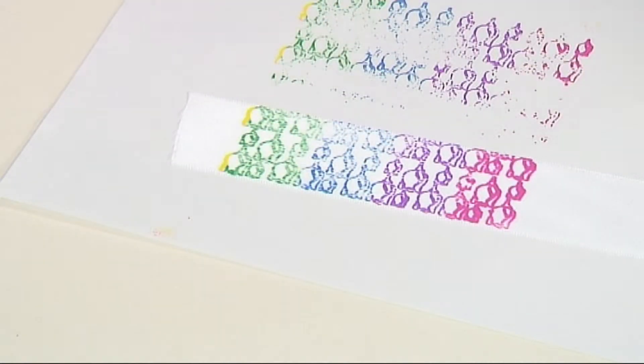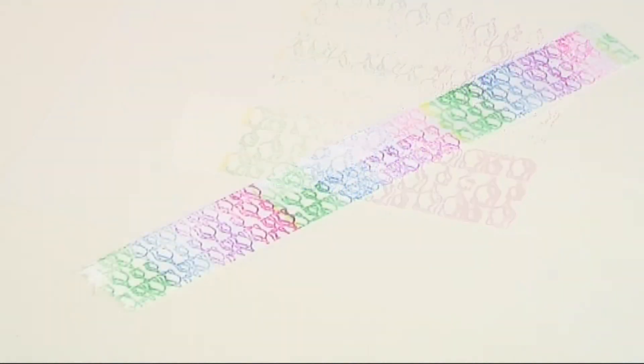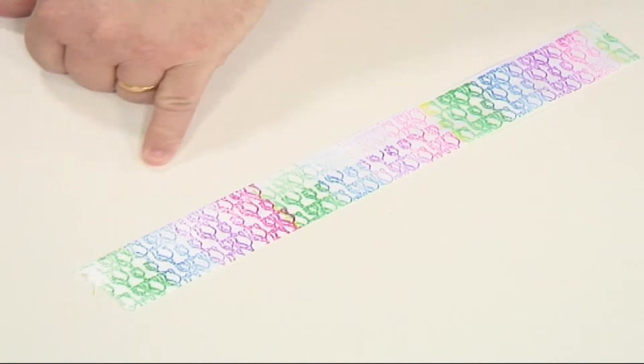And then just lift the stamp off, and you can see you've multi-colored stamped the ribbon all the way along in that rainbow effect of tulips.